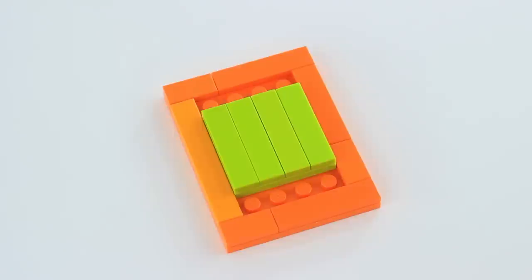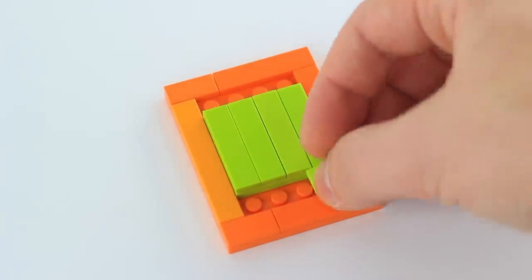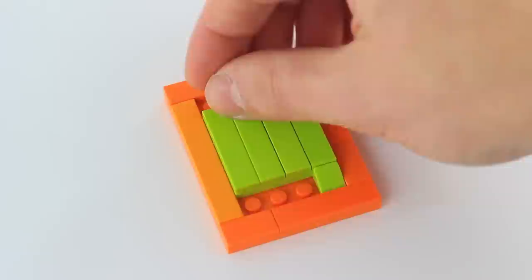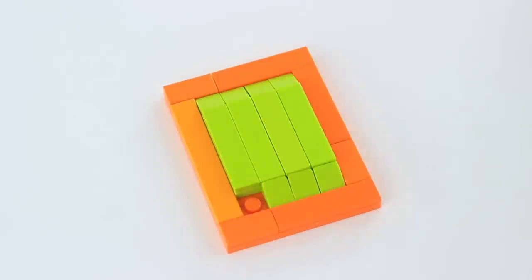And finally, you are going to put on 8 of the yellow-green 1x1 ramps. And just like that, the first plate, or first side of the machine, is complete.